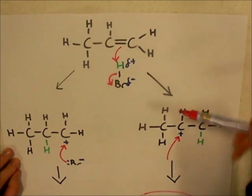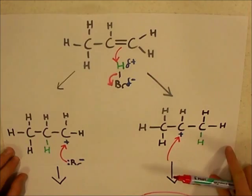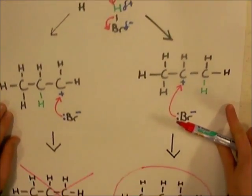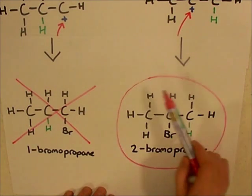This means if you follow it through, you end up with this carbocation intermediate with the positive charge in the middle, and you'll end up with the product circled in red, the 2-bromopropane as your final product.